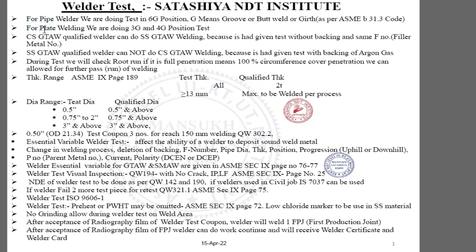If we are taking the test on plate, normally we take it in 3G and 4G position. Also, if a welder is qualified in CS (carbon steel) GTAW welding, he can do SS (stainless steel) GTAW welding because he gave the test without backing. The F number is the filler metal number. If a welder is qualified in SS stainless steel GTAW, he cannot do carbon steel GTAW welding because he gave the test with backing of argon gas.